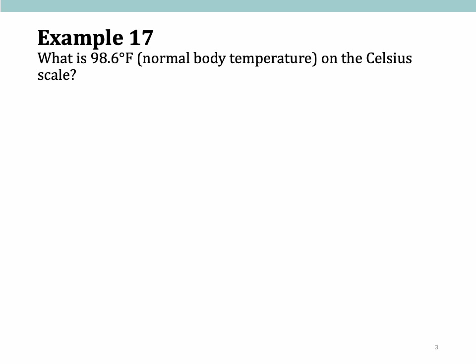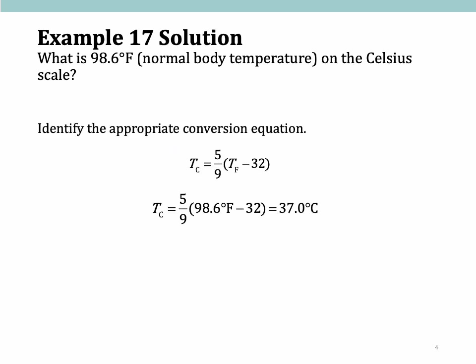Example: What is 98.6 degrees Fahrenheit on the Celsius scale? I need to convert Fahrenheit to Celsius using T_C equals 5/9 times (T_F minus 32). So T_C equals 5/9 times (98.6 minus 32), which gives 37 degrees Celsius.